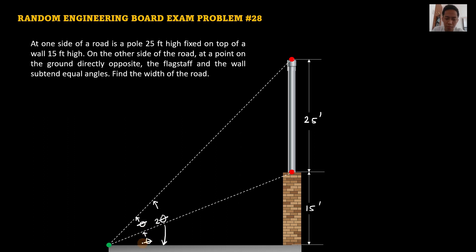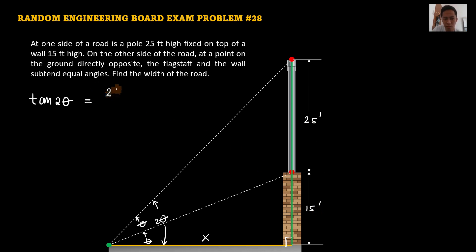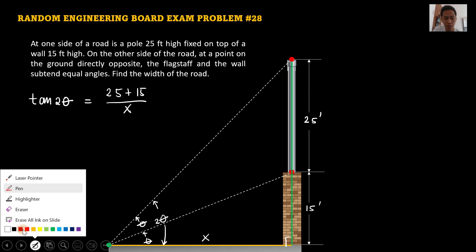So this total angle here is 2 theta — twice the angle theta. Based on this figure, we can form two right triangles: a bigger right triangle and a smaller right triangle. The width of the road is this orange line, which we denote as x. Based on the relationships in the bigger right triangle, tangent of 2 theta equals its opposite side over its adjacent side — that is (25 + 15) over x, which gives us our first equation.